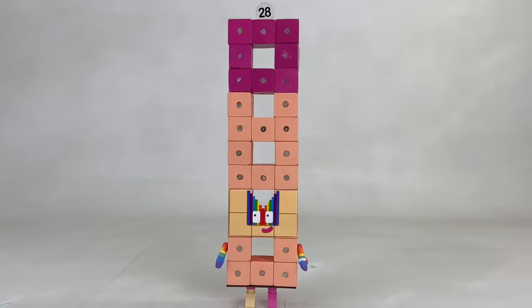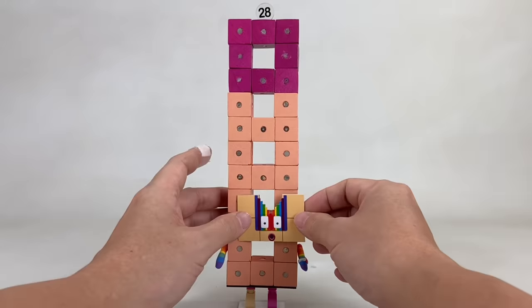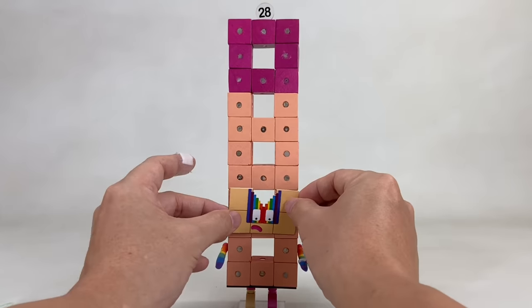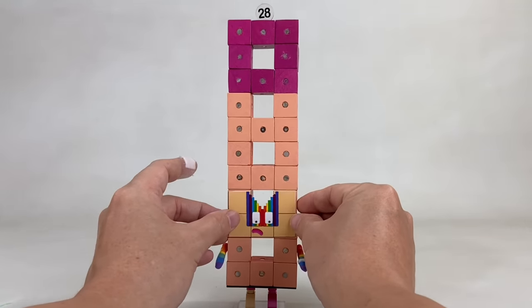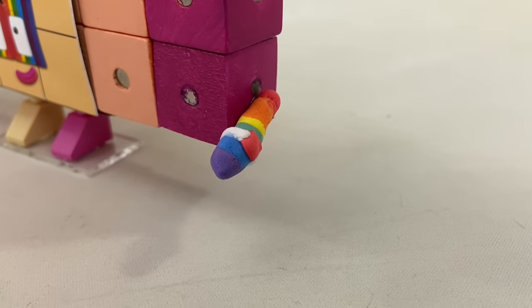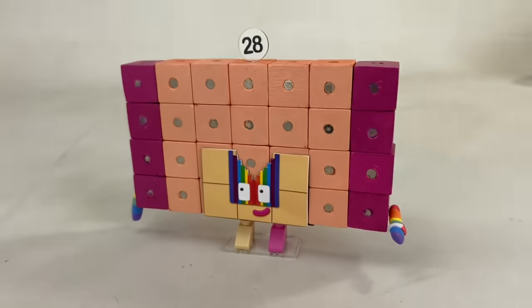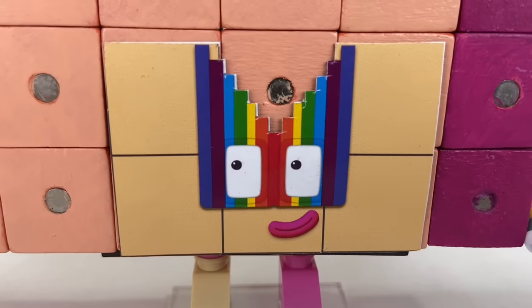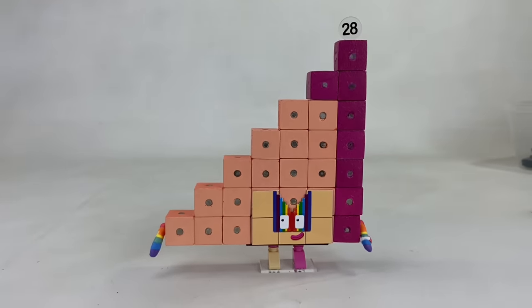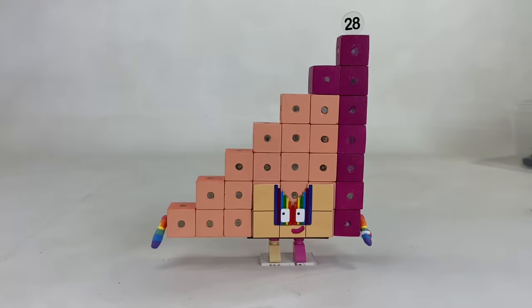We can also make other facial expressions, like a surprised face and a sad face. 28 wears an array display because she's a super rectangle. She has a rainbow step-shaped mask because she's a member of the step squad, the sum of one to seven.